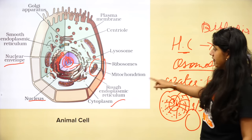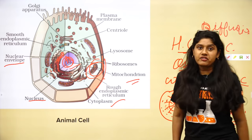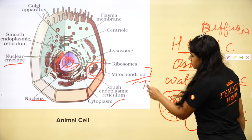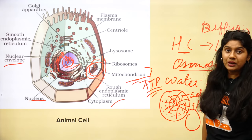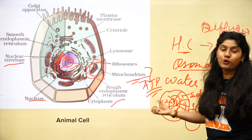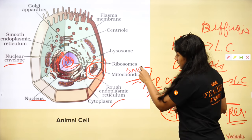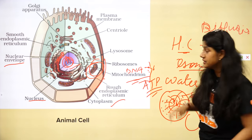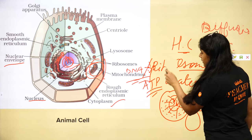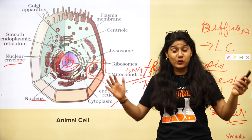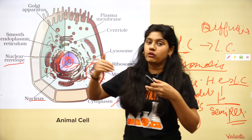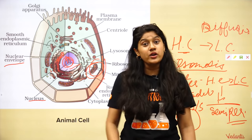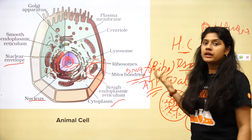Mitochondria is the ATP production machine of the cell — it gives us ATP, the energy molecule. Mitochondria have their own DNA and ribosomes, so they can make their own DNA and proteins completely independently without needing other organelles.